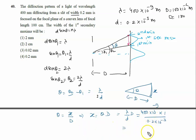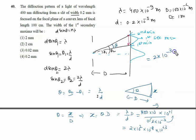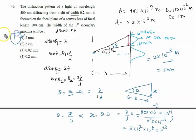Calculating: x = (400×10⁻⁹ × 1) / (0.2×10⁻³). The numerator gives 400×10⁻⁹ and the denominator is 0.2×10⁻³, so we get 2×10⁻³ meters, which is 2 millimeters. Therefore, the correct answer to this problem is option one: 2 millimeters.